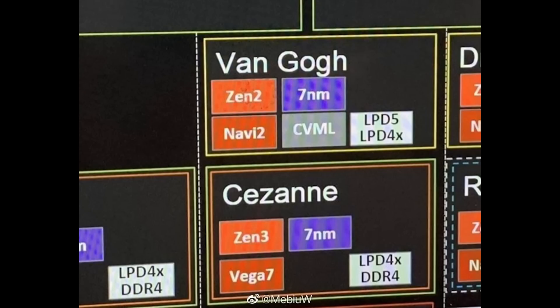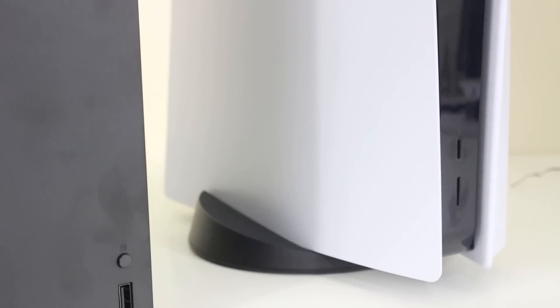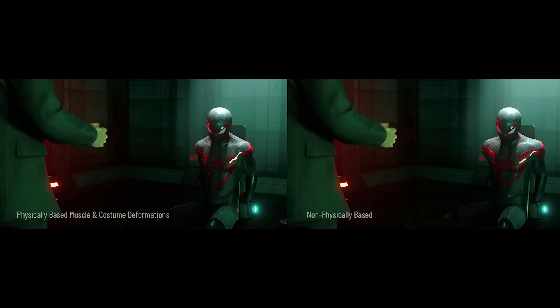Logically, Sony can probably run these operations because their compute units are based on RDNA 2 tech. Remember, an architecture is not the same thing as the actual feature set of a GPU. A great example is Van Gogh from AMD — it's literally RDNA 2, but it doesn't have infinity cache, just like the Xbox doesn't have infinity cache for its RDNA 2 implementation. The question is whether the PS5 has lower precision operations as a feature. According to Josh DiCarlo, an Insomniac employee: 'Not sure how specific I can get for the specs now, but you are correct in the assumption that all final deformations are resulting via DirectML inference at runtime on the PS5 hardware. There are no blend shape, skin decomp, or traditional tricks of the trade.'